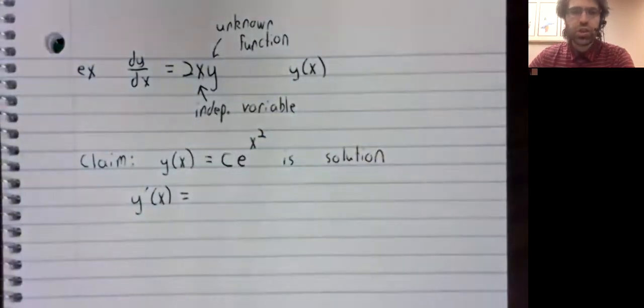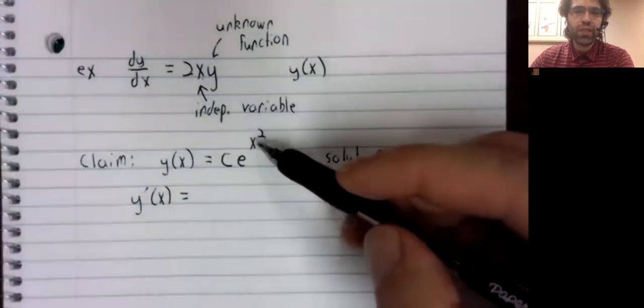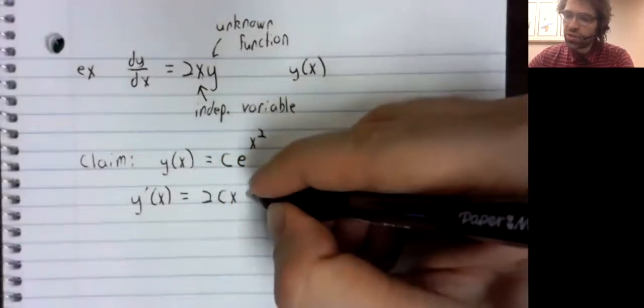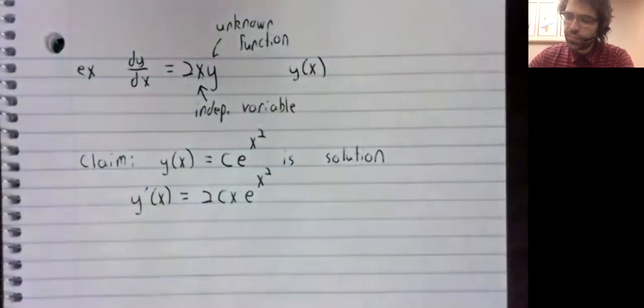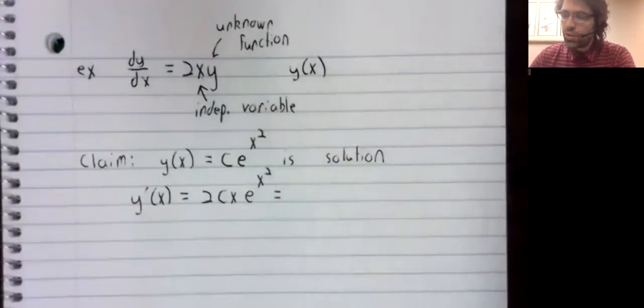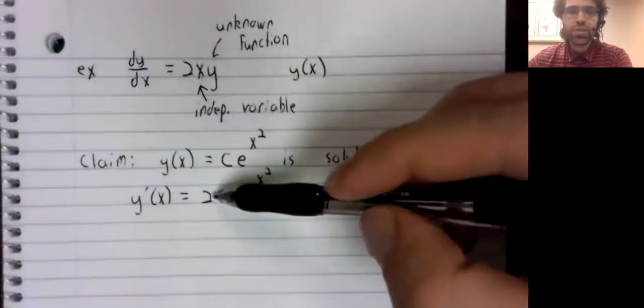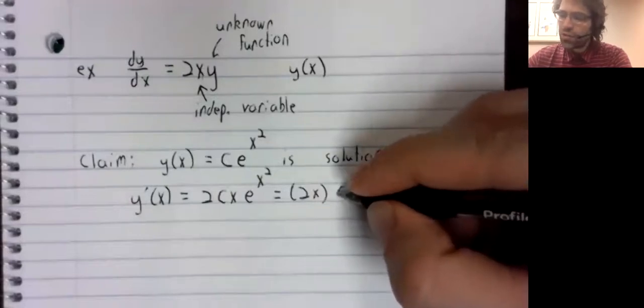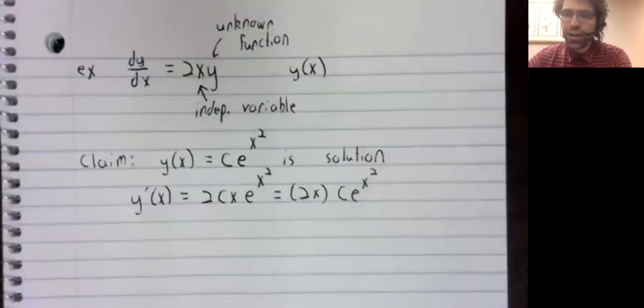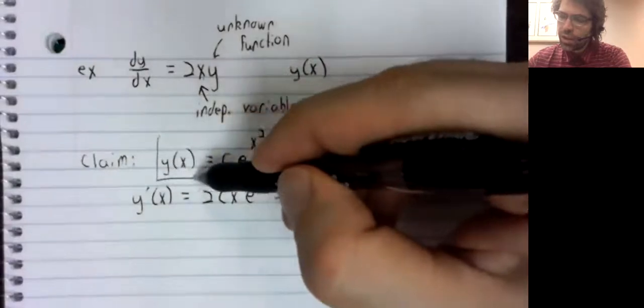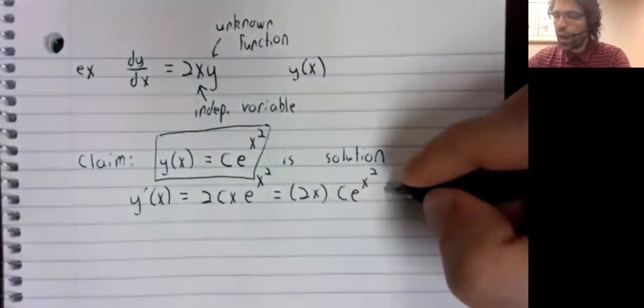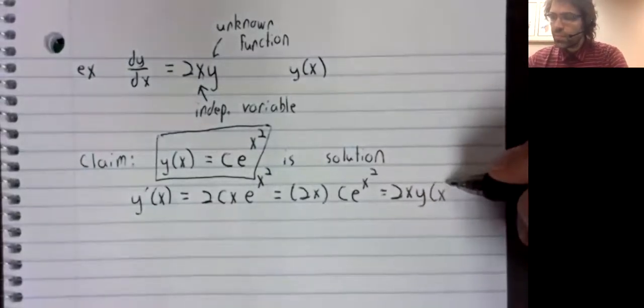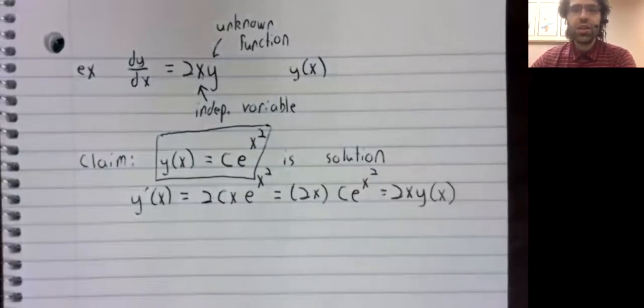Again, we need the chain rule to take this derivative. The derivative of this inside function is 2x. So let me see. We want a 2x. We've got a 2x. So let's put those together. And then we've got Ce^(x²). And Ce^(x²) is y(x).